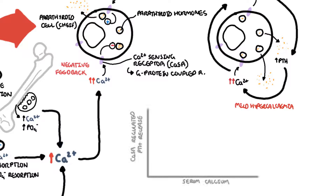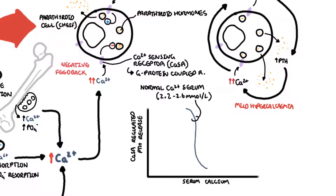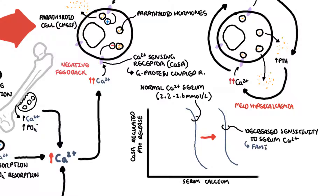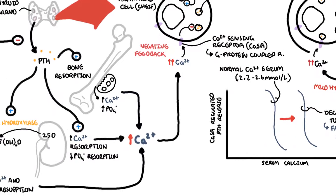As an example depicted by this graph, on the x-axis you have serum calcium levels and on the y-axis the calcium sensing receptor's regulation of parathyroid hormone release. Normal serum calcium levels are between 2.2 and 2.6 millimoles per liter, well maintained by the CASR regulating PTH release. In familial hypocalciuric hypercalcemia, the graph shifts to the right, meaning there is decreased sensitivity to serum calcium levels. The CASR will only respond to higher calcium levels, hence you typically only get mild hypercalcemia because the receptor still works — it just requires a lot more prompting.